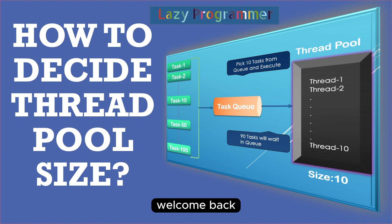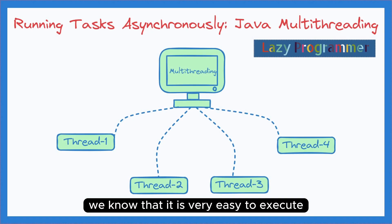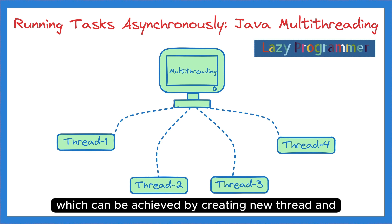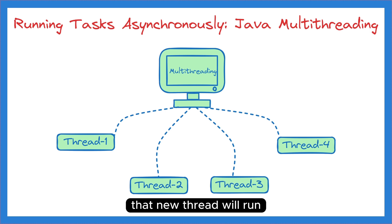Hello everyone, welcome back. We know that it is very easy to execute any task asynchronously in Java, which can be achieved by creating a new thread and running that task or a piece of code using that thread. That new thread will run separately from the main thread.